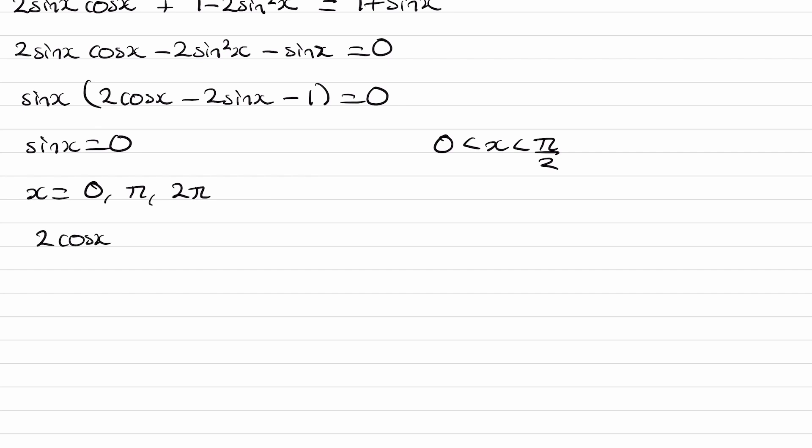Set this bracket equal to 0. Factorize out the 2. Bring the 1 to the right. And finally divide both sides by 2. And there we have it.